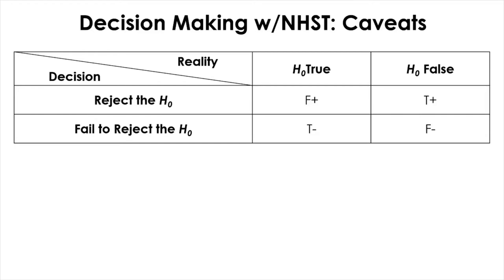The status of true reality about the null — which is unknown to us — is listed column-wise. In reality, the null may be true or false. The rows represent the decision we make about the true reality after running NHST.